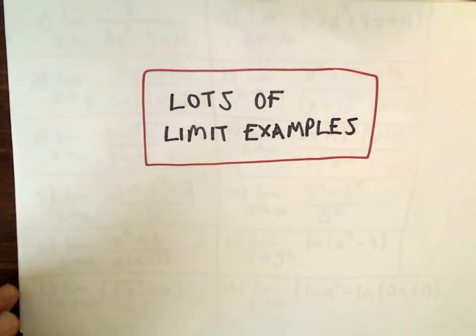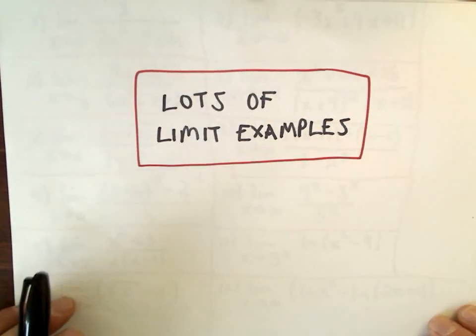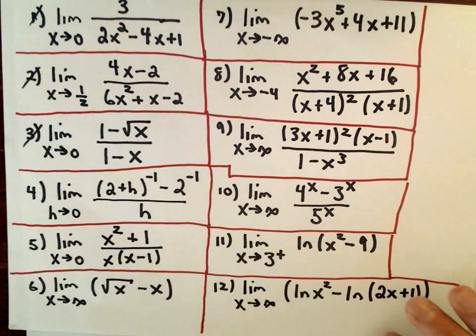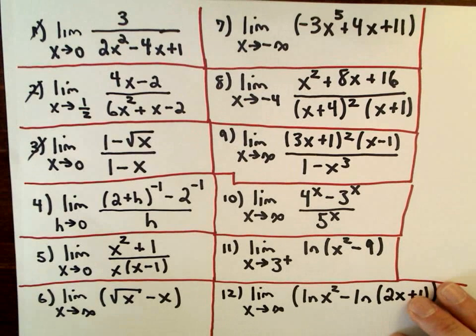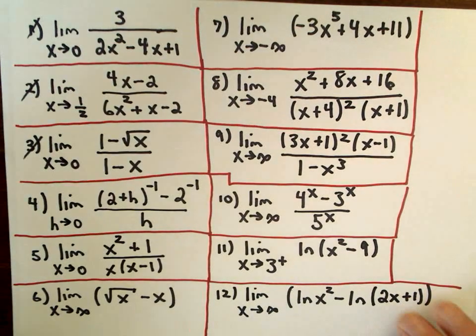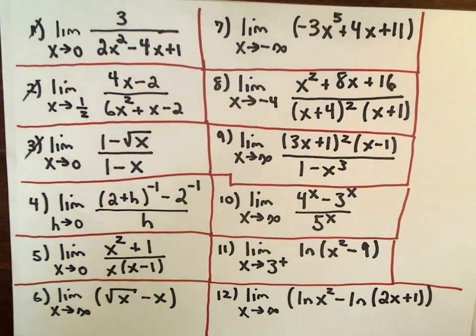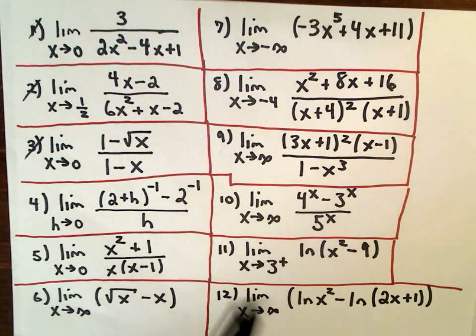This is going to be part two of my lots of limit examples video. In the first part we did one, two, and three, and a variation of three. So let's jump into number four here.